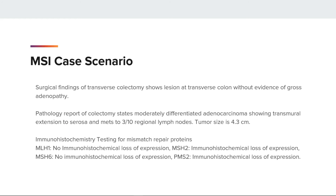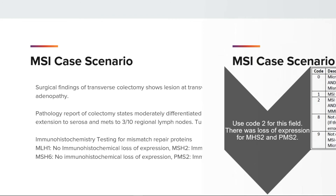Thank you for taking the poll. The correct answer is code 2. Use code 2 for this field when there is loss of expression for MSH2 and PMS2. Other cases may indicate code 1 or 2 if the MSI is performed and stated to be low or high. This case scenario only had MMR IHC studies performed. The test result could also be stated as MMR protein deficient, and the correct code would be 2.